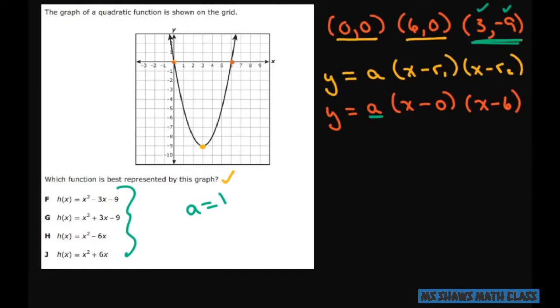So let's look and see what happens with that. So we have negative 9 equals A, and our x is 3. So plug in 3 minus 0 times 3 minus 6.